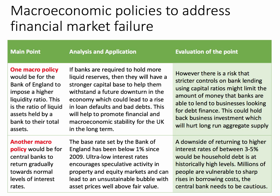But the downside of returning to higher interest rates — say 3% to 5% — would be that household debt is at historically high levels. Millions of people are exposed to sharp increases in borrowing costs. Therefore the central bank needs to be very cautious in raising interest rates at the present time. So we're building macro policies — liquidity ratios and higher interest rates — in order to prevent excessive growth of credit and asset price bubbles, both causes of market failure.